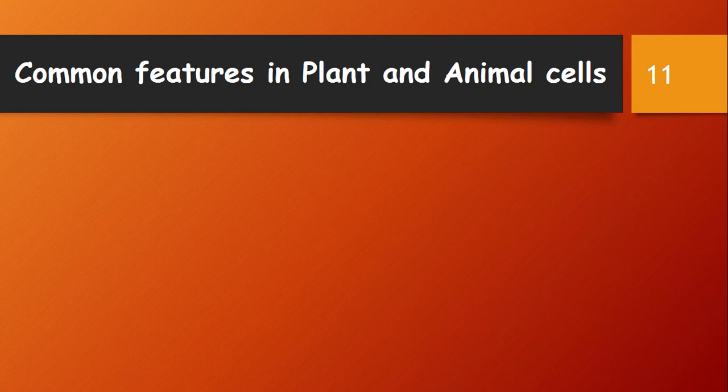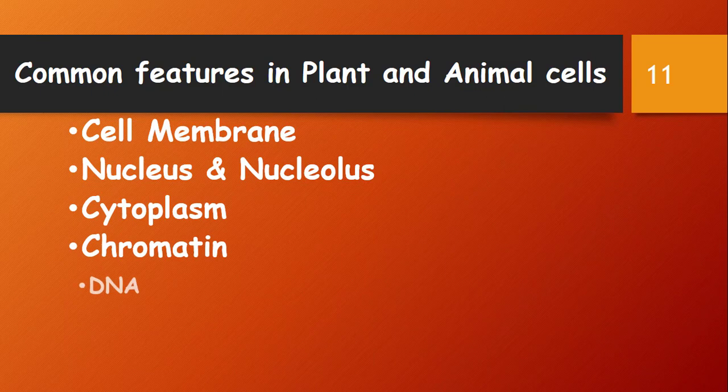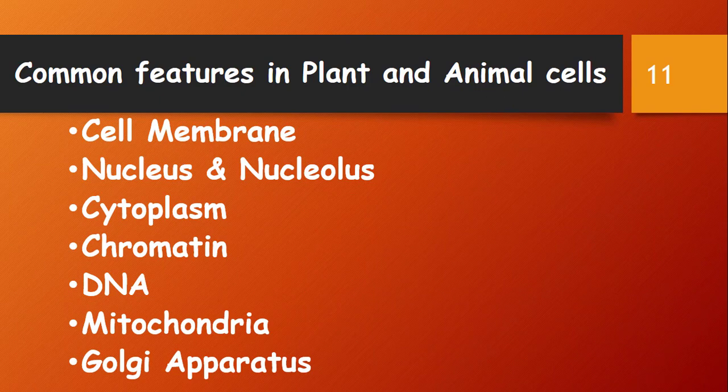Both plant and animal cells are eukaryotic, meaning they are closely related, though there are organelles present only in plant cells and others only in animal cells. Common features include: cell membrane, nucleus and nucleolus, cytoplasm, chromatin material, DNA, mitochondria, and Golgi apparatus.